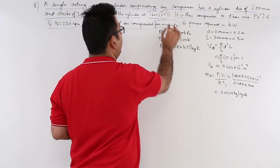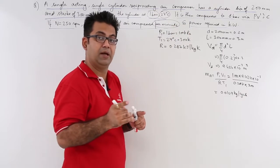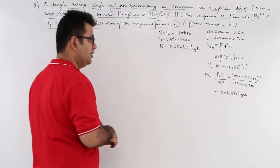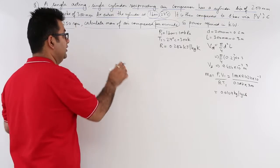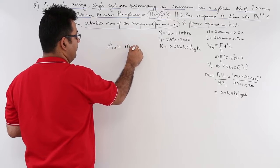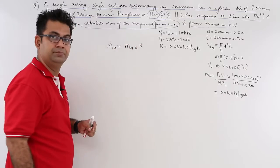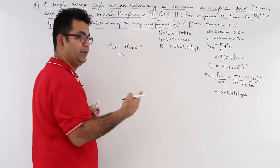But we need per minute. So if you remember the formula for the induction volume rate, similarly we can find out induction mass flow rate. That would be Ma dot equals Ma into RPM. So you will have, this is inductions per minute.